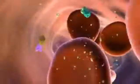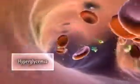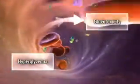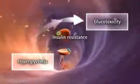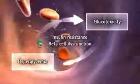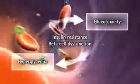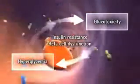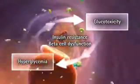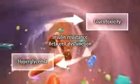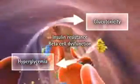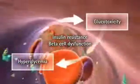Over time, these factors contribute to the sustained hyperglycemia that leads to glucotoxicity, which worsens insulin resistance and contributes to beta cell dysfunction. In this way, hyperglycemia appears to perpetuate a vicious cycle of deleterious effects that exacerbate type 2 diabetes.